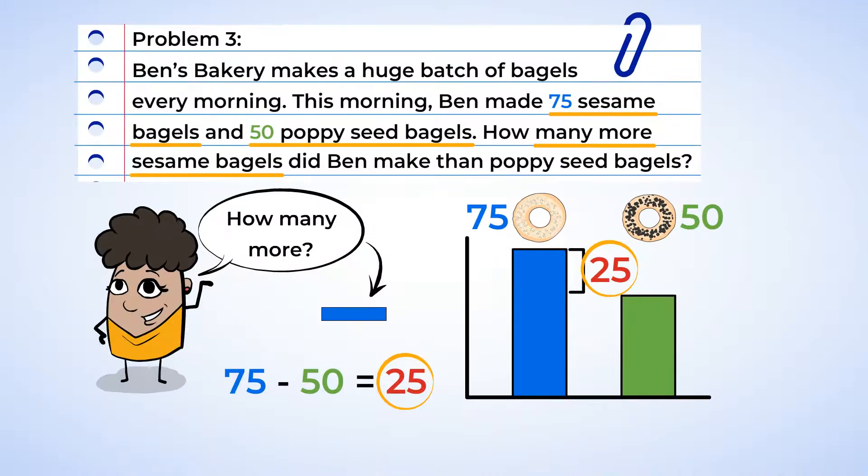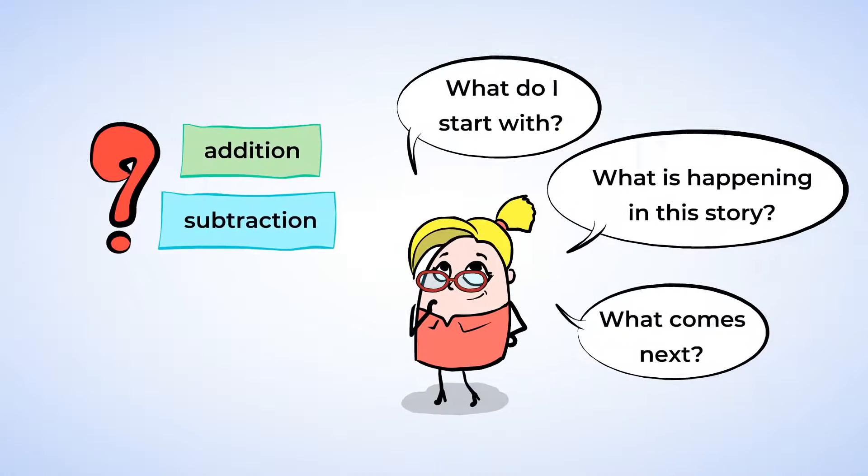When you see how many more or how many fewer, it means that you are comparing two things. You will probably want to take the smaller amount and subtract it from the larger amount. Then, if you are still not sure whether to add or subtract, try asking yourself some questions like, What happens first? And, What happens next? This can help you figure out whether the numbers should be added together or subtracted.